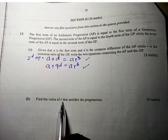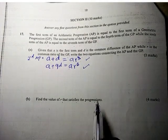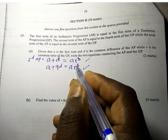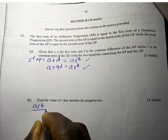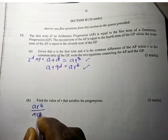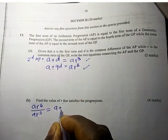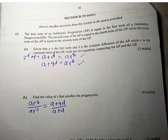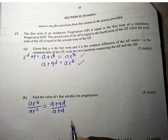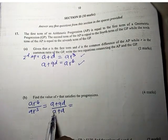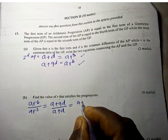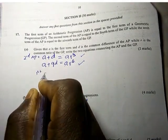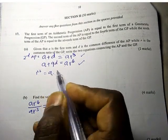Now find the value of R that satisfies the progression. To get R, we divide: AR⁶ divided by AR³ equals (A + 9D) divided by (A + D). Also, the second divided by the first gives (A + D) divided by A, since A is the first term of both the AP and GP.